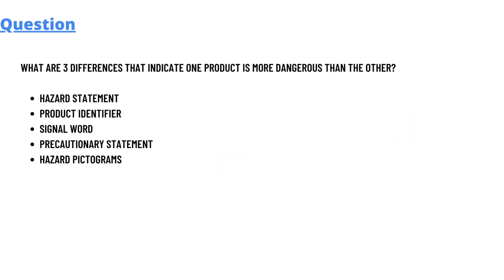Our today's question which we will be discussing is: what are the three differences that indicate one product is more dangerous than others? We have five things here to discuss about, but what are the three differences that indicate one product is more dangerous than others — is its hazard statement, its product identifier, signal word, precautionary statement, or hazard pictograms.